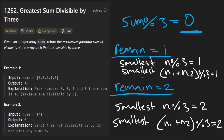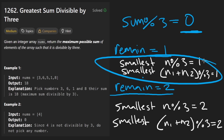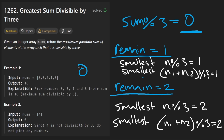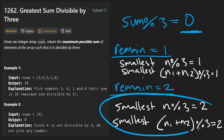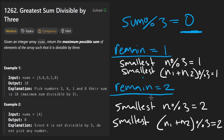It's also possible we end up in a case where neither of the options exists, in which case we would just return 0. Now that we have the intuition, how do we actually implement it?